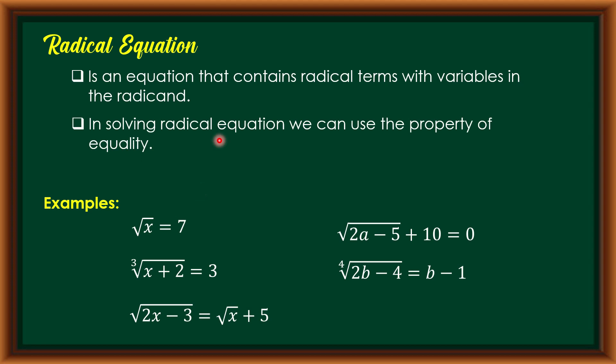In solving radical equations, we can use the property of equality, in which if two numbers are equal, then when raising both sides of an equation to an even power, they are still equal. In symbols: if x is equal to y, then x raised to n is equal to y raised to n.